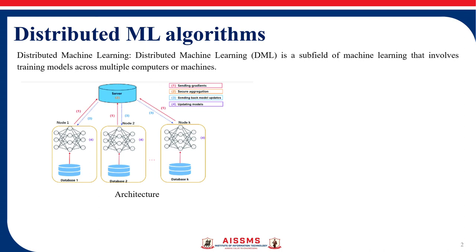In distributed machine learning we have parallel processing. Whenever a single machine or laptop does not satisfy the requirement to train a machine learning model with a more significant amount of data, the solution is distributed machine learning, where we distribute the task and perform them parallelly.